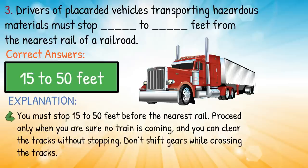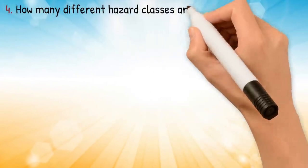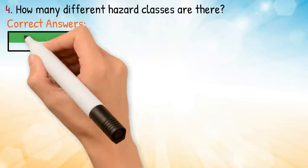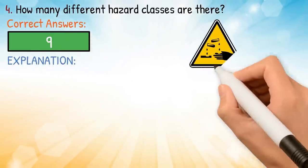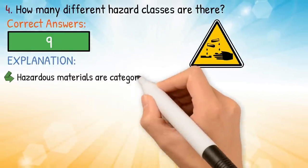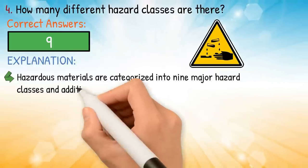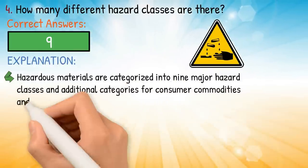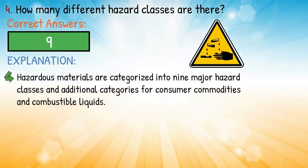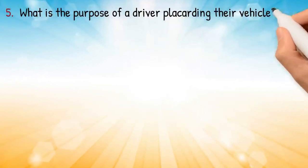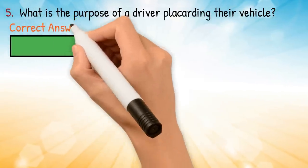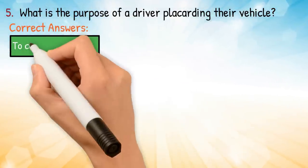Don't shift gears while crossing the tracks. Question four: how many different hazard classes are there? Correct answer: nine. Explanation: hazardous materials are categorized into nine major hazard classes and additional categories for consumer commodities and combustible liquids.